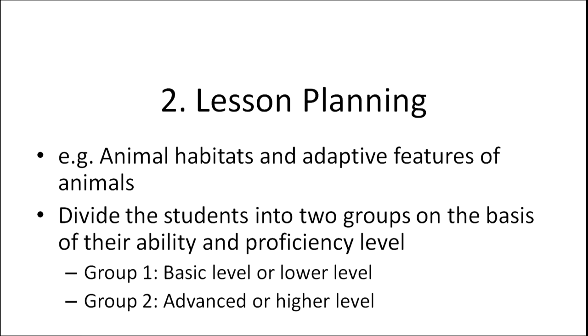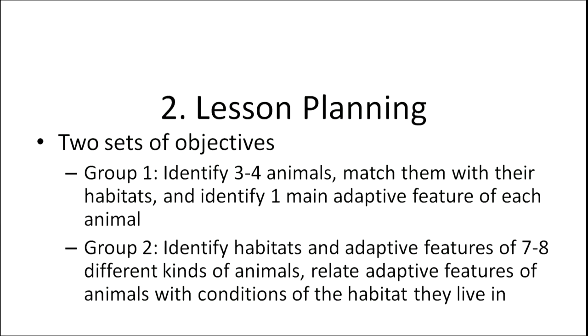Developing two or three parallel objectives for lesson plans is an important aspect of a multi-level classroom. For example, if the teacher is teaching the topic of animal habitats and their adaptive features, she divides students into two groups based on ability and proficiency level. For group one — basic or lower level students — students can be asked to identify three or four animals, match them with their habitats, and identify one main adaptive feature of each animal.